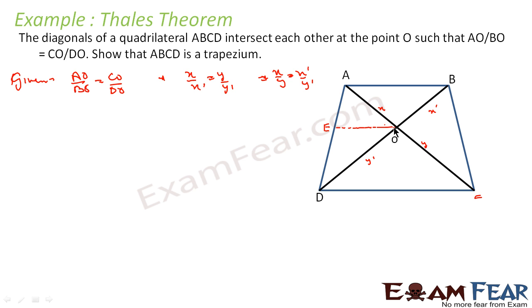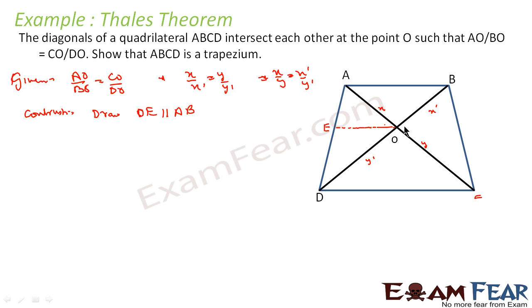Construction: draw OE parallel to AB. Now, if we can prove that OE is also parallel to DC, then we can conclude that AB is parallel to DC, since OE is parallel to AB and OE is parallel to DC implies AB is parallel to DC. So we have drawn OE parallel to AB, and we need to prove OE is parallel to DC.